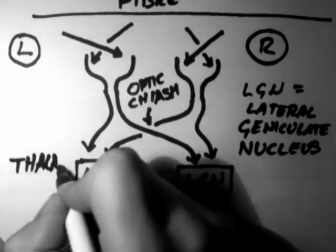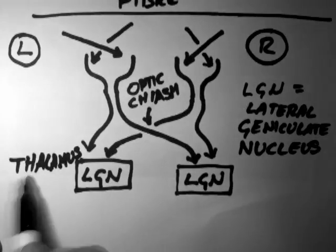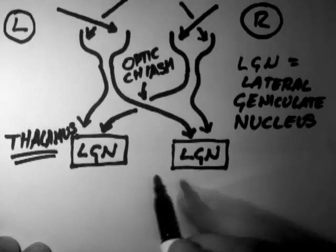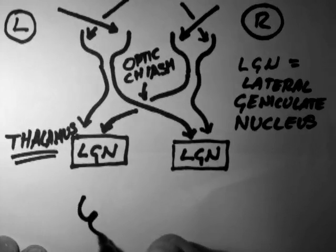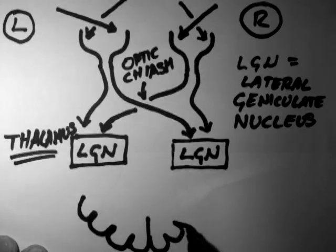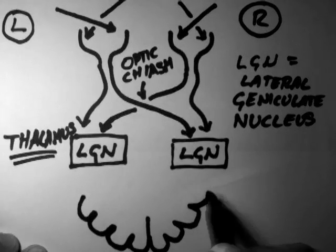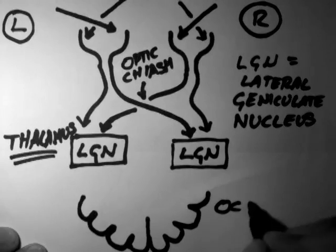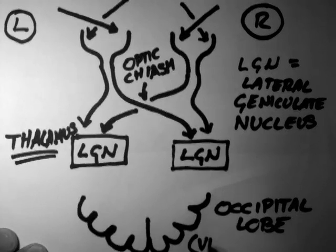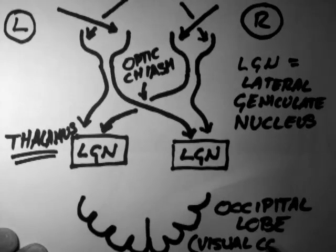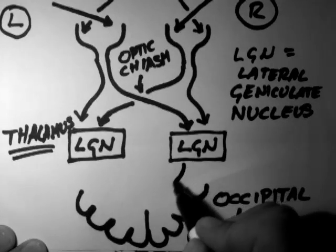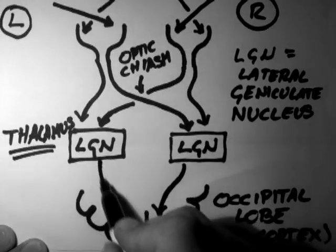The LGN is in the thalamus. Remember, the thalamus is a structure in the middle of the brain. Now the information gets sent from the LGN to the occipital lobe of the brain, also known as the visual cortex. The information goes from the LGN to the visual cortex on the same side. And that's the visual pathway.